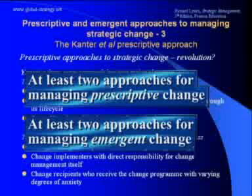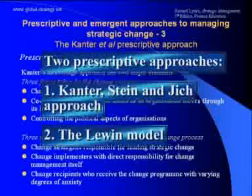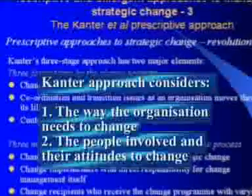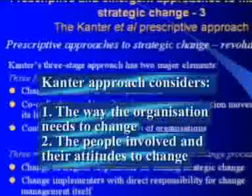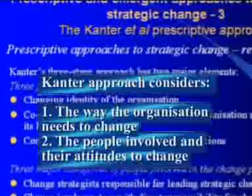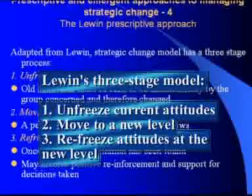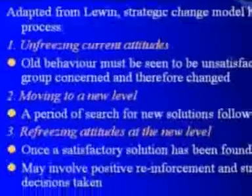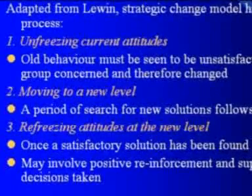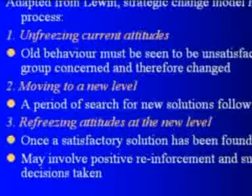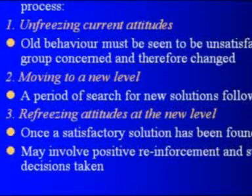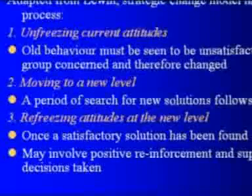Let's deal first with prescriptive change. Kantor, Stein and Jig recommend a three-stage approach — essentially a top-down guide to managing planned change and its consequences throughout the organisation. As an alternative, Lewin developed a three-stage model for the prescriptive change process: Part 1, unfreezing current attitudes; Part 2, moving to a new level; Part 3, refreezing attitudes at the new level. This model has been widely used to analyse and manage strategic change.